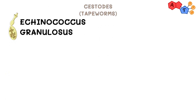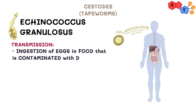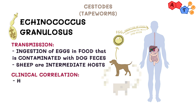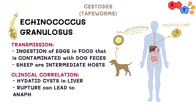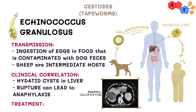The last tapeworm we're going to talk about is Echinococcus granulosus. It is transmitted to humans by ingestion of eggs in food contaminated with dog feces. It's also nice to know that sheep are intermediate hosts. Echinococcus granulosus can lead to the formation of hydatid cysts in the liver, described to have eggshell calcification, usually detected on CT scan. The contents of the cysts can lead to anaphylaxis if the cyst ruptures. Treatment is albendazole.